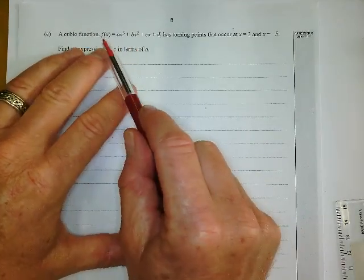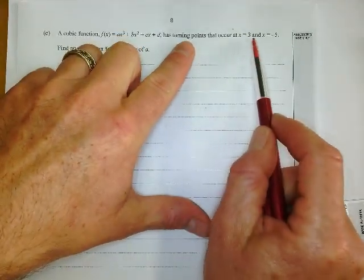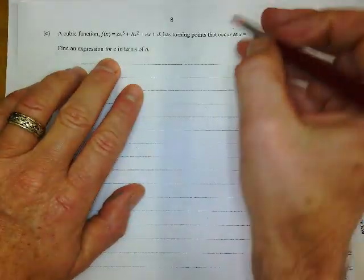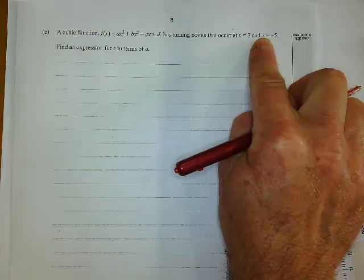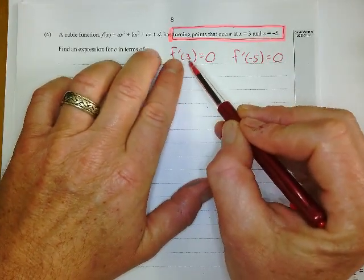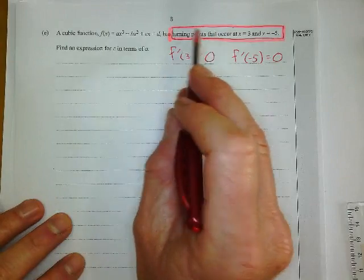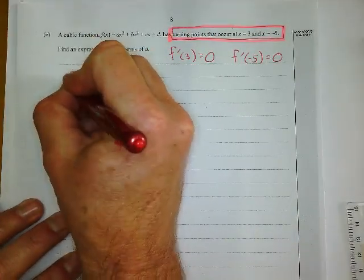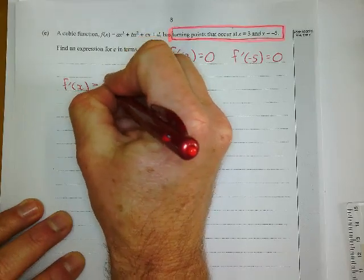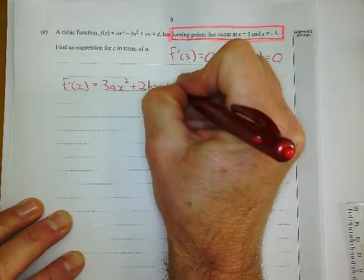Let's get down to business with this one. So cubic function has this formula here with a bunch of letters, and it has turning points that occur at x equals 3 and x equals negative 5. Find an expression for C in terms of A. So probably the hardest one in the exam, I would say. Let's start with this right here and translate this. So the turning points at x equals 3 and negative 5 means that the derived equation at x equals 3 is going to be equal to 0 at negative 3, and it's going to be equal to 0 at negative 5. And this is going to help us hugely. So turning points means I'm going to have to derive this equation. When we derive this, the A, B's and C's don't go away. They just hang out. So I get 3ax squared plus 2bx plus C.